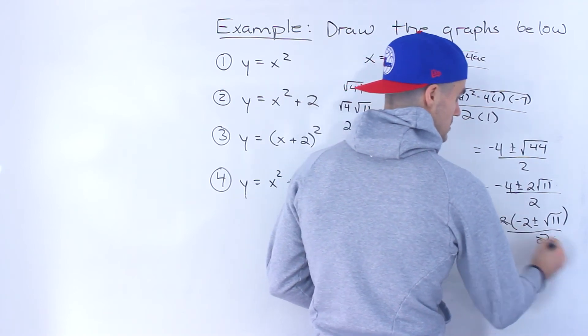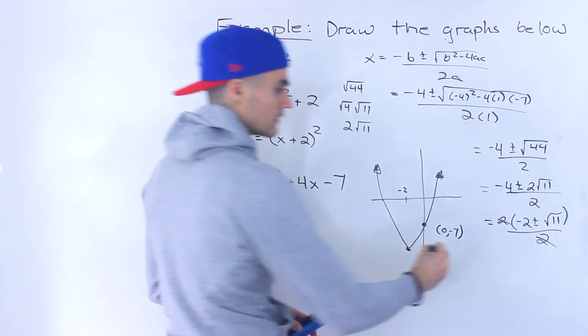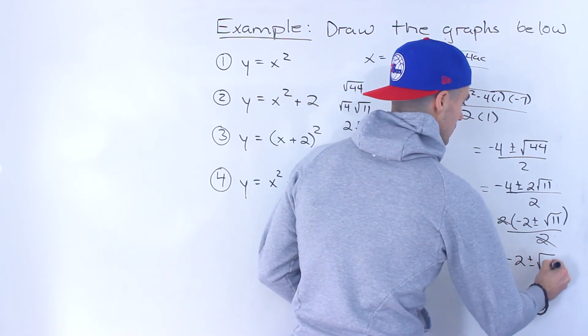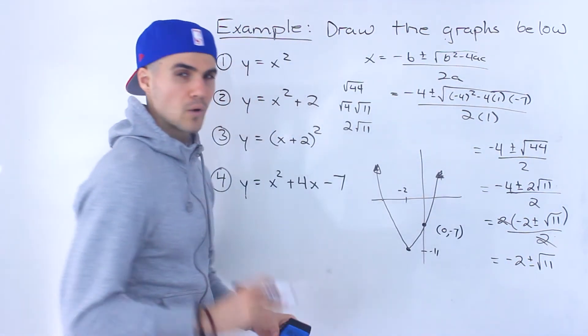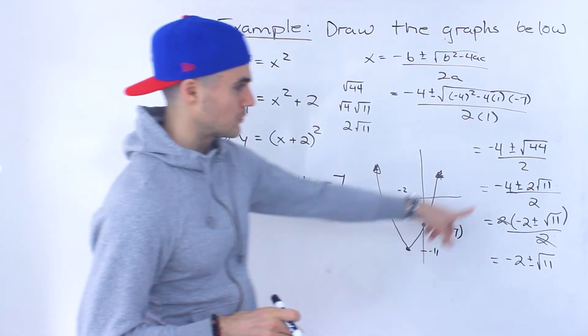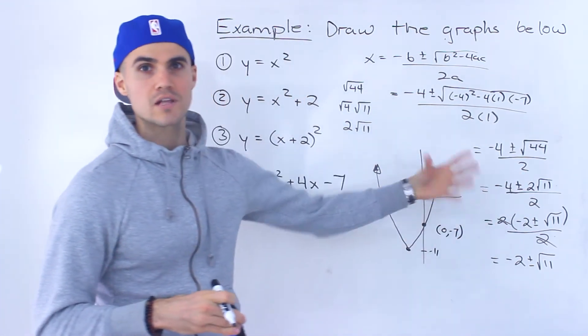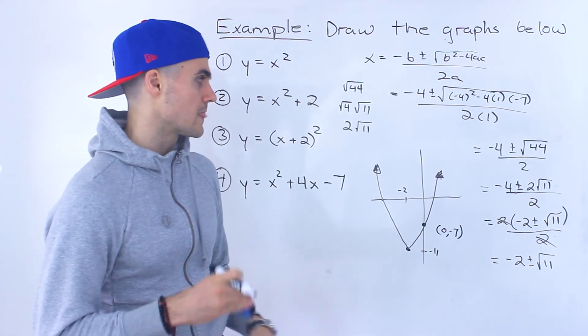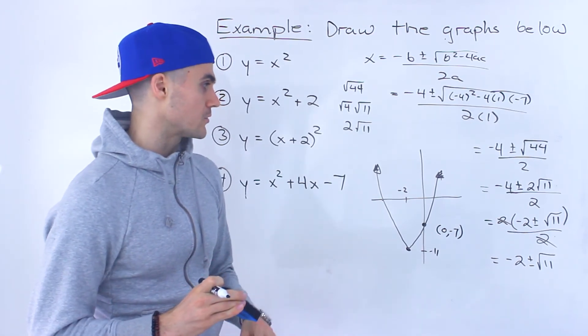This is going to be all over 2, and then notice the 2s, they cancel out. And so we'd end up with negative 2 plus or minus root 11. If you want a little bit more practice in dealing with radicals and simplifying radicals, let me know, and I could send you some links to the grade 11 high school course. I go over a lot more examples there.